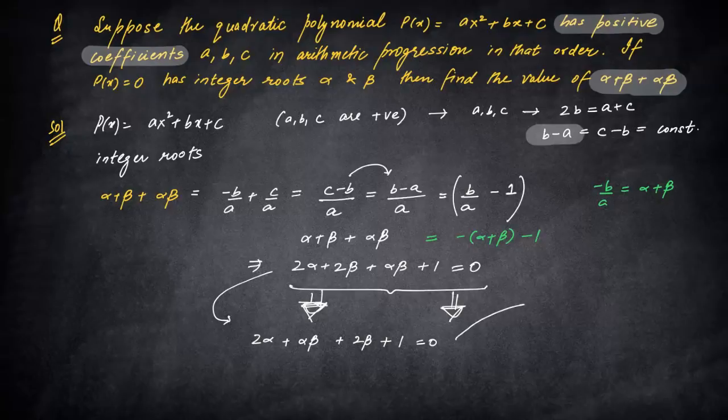If you can find the next step to this particular question, believe me, the question is already solved. It's simple, but might be difficult for students in 10th or who have just moved to class 11. We can say 2α + αβ can be combined. Let's put 2β + 1 for the time being here. Now if I try to solve this, I take α common out of these two. If you take α common, it will be α(β + 2).